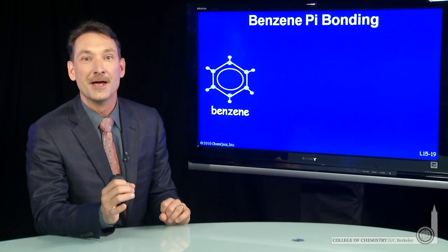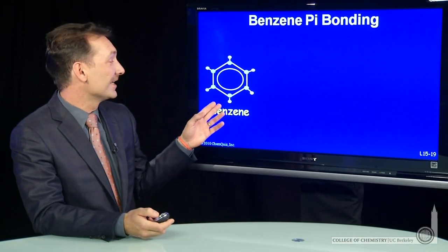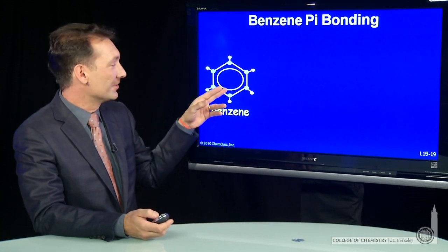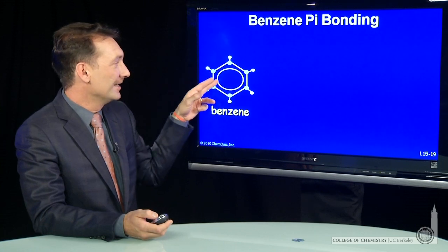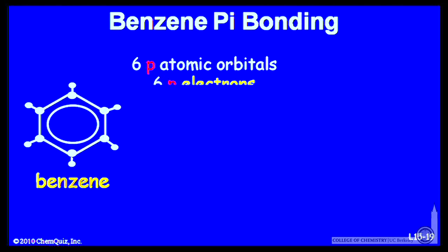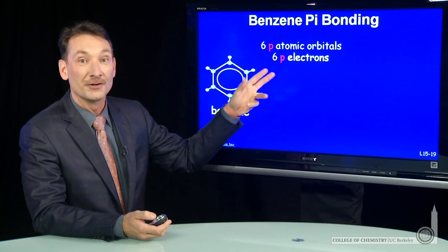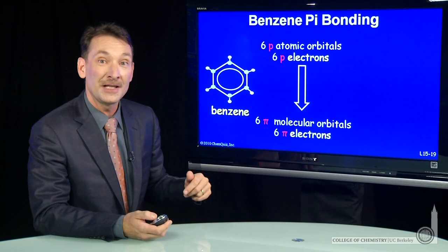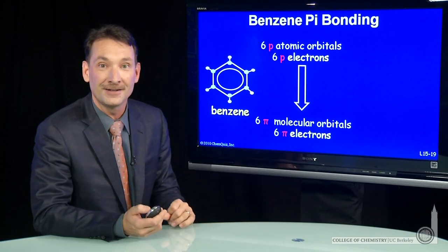Let's look at the molecular orbital system in benzene. Benzene, C6H6, is often drawn like this schematically, with alternating double bonds in a ring system. Each carbon is sp2 hybridized, meaning each carbon has an extra p orbital that can be used for pi bonding. So six atomic p orbitals and six p electrons will form six pi molecular orbitals to be filled with six pi electrons.